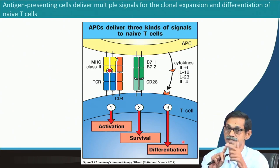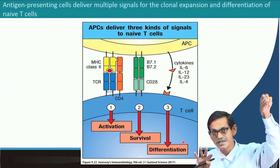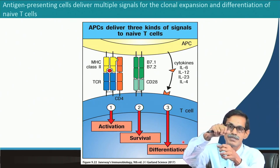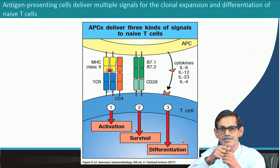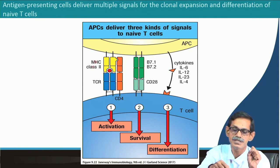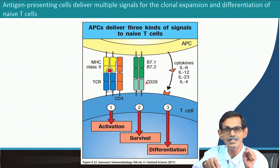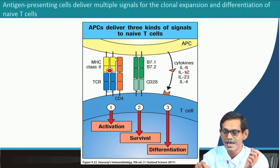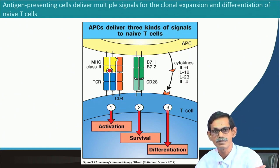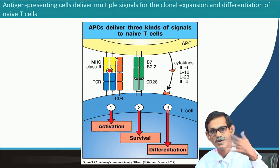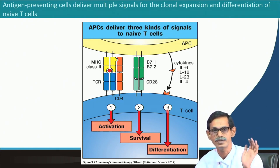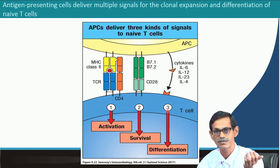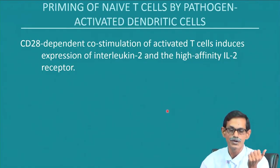All three signals are required to get effector T cells active in the immune system. To summarize: generic adhesion molecules bring the cells together, then MHC–TCR and B7–CD28 interactions give survival and activation signals, and the third signal from cytokines released by the antigen presenting cell tells the T cell to proliferate and differentiate to have effector function.